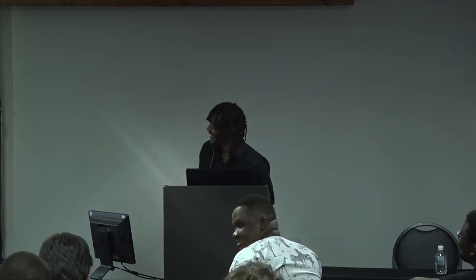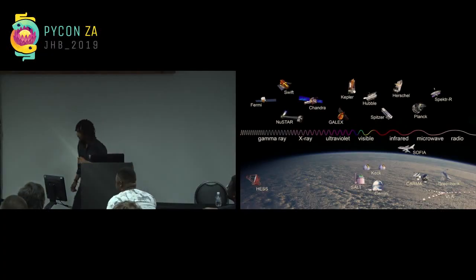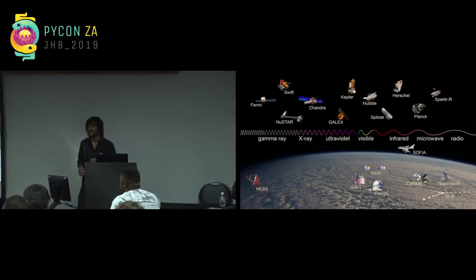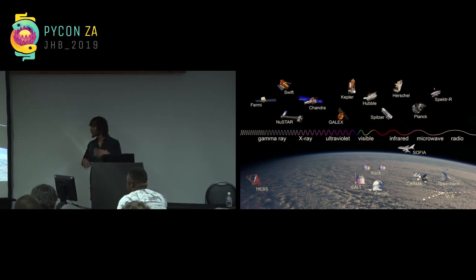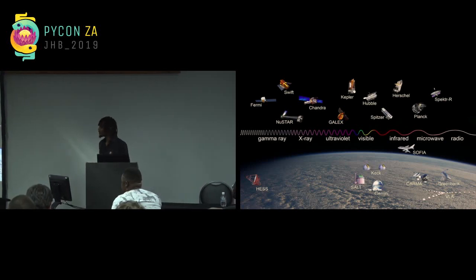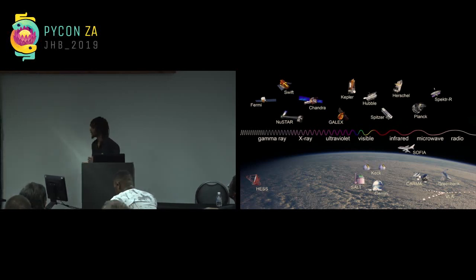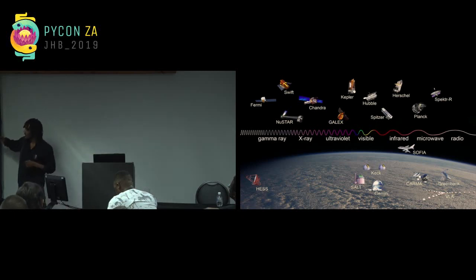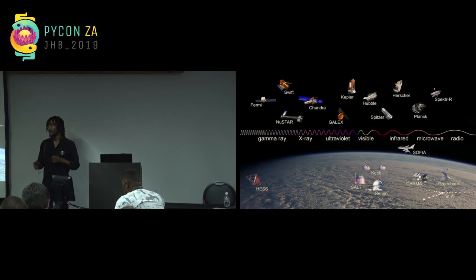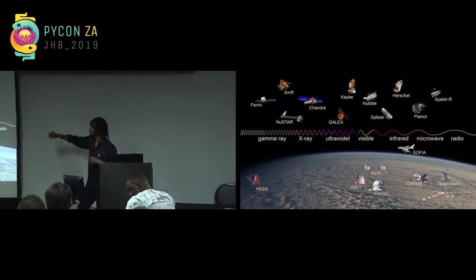And then the creator said, let there be light, and then there was light. So with this light, which we often refer to as electromagnetic radiation or electromagnetic waves, it has a range of frequencies or wavelengths — from gamma rays to radio waves. What SARAO is mostly focused on is the radio part of this spectrum.